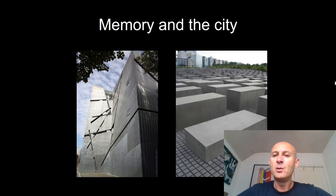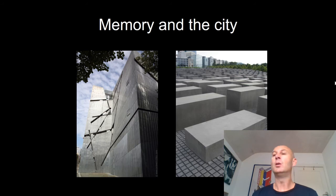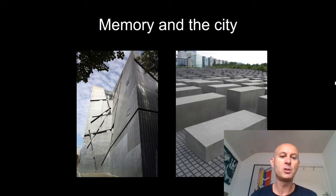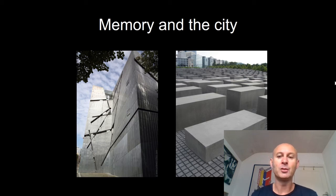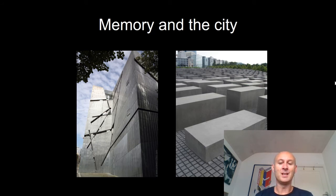Another thing we look at during the week is memory and the city. Berlin has a very interesting and often incredibly violent and traumatic history. Since the end of the Cold War, during the 1990s and early 2000s, Berlin has taken very seriously the idea that its history and trauma should be memorialised in the landscape. On the left of this slide we have the Jewish Museum and on the right the Memorial to the Murdered Jews of Europe, otherwise known as the Holocaust Memorial. We think about how architecture, sculpture, and public art can communicate ideas about history and memorialisation in the city.